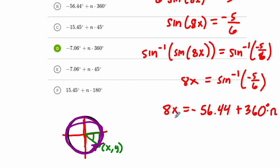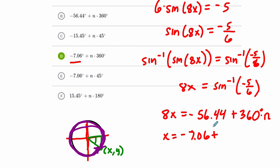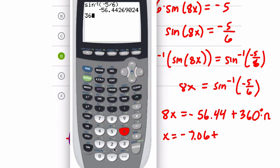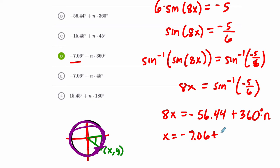Now, that's what 8x has to equal. If 8x is negative 56.44 degrees plus some amount of rotations, then it's going to have the same sine. But I want to know what x equals, not 8x. So, I divide everything by 8. I get negative 56.44, which you can see is negative 7.06, plus 360 divided by 8, and we have 360 divided by 8 is 45.